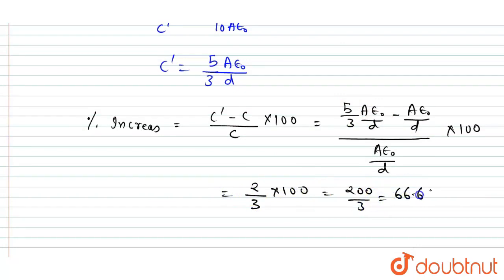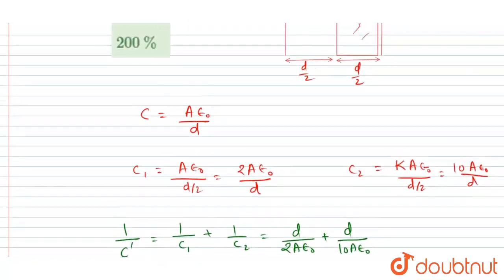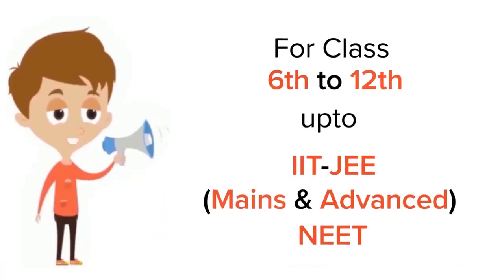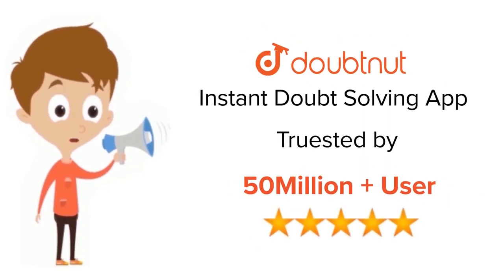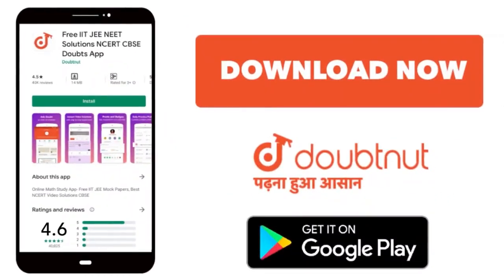The percentage increase is 200/3, which equals 66.67%. This is the answer. The correct option is 66.6%. Thank you. For classes 6–12, IIT JEE, and NEET level, trusted by more than 5 crore students — download DoubtNet today.